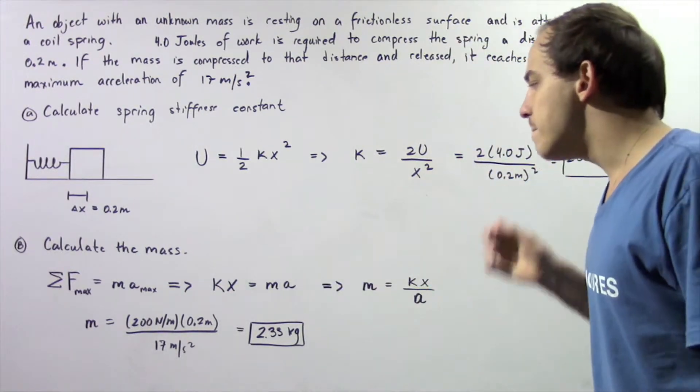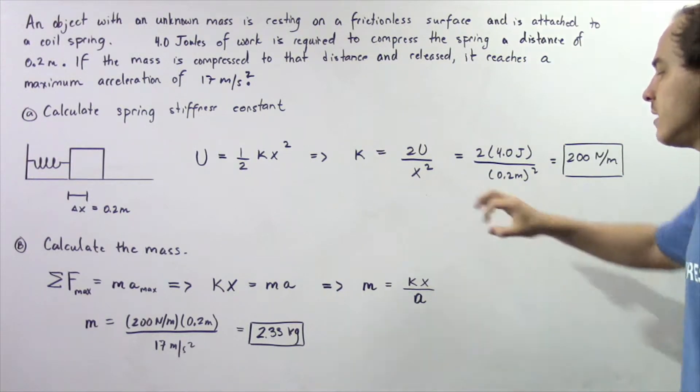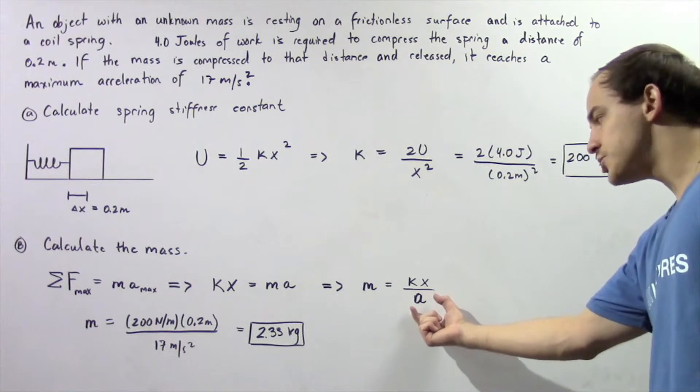We solve for m and get that the mass equals the product of the spring stiffness constant and the maximum displacement divided by our maximum acceleration.